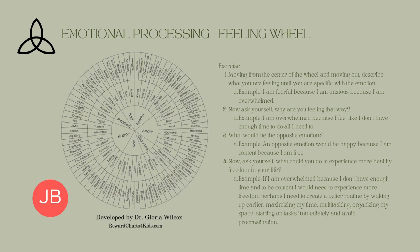Choose an emotion you're feeling today and start at the center of the wheel. Are you feeling fear, anger, disgust, surprised, happy, or sad? Just choose one. For this example, I'm going to choose fear. Then go to the second circle in the feeling wheel, staying within the triangle of fear — what kind of fear am I feeling? Fear of humiliation, fear of rejection, fear of being submissive, insecurity, anxiety, or am I actually terrified of something? Choose that second level.